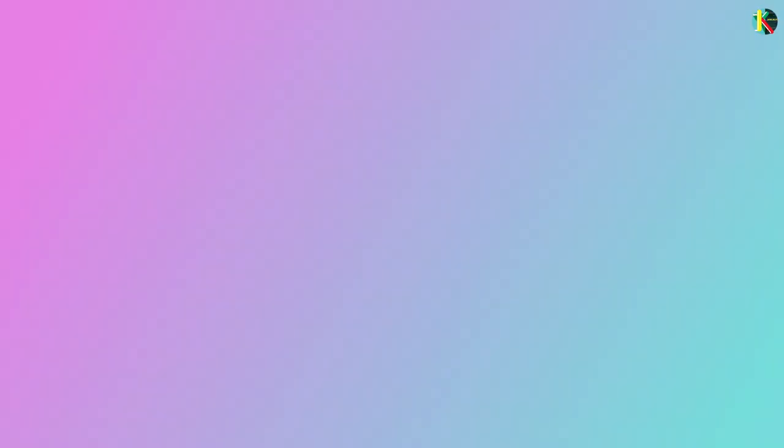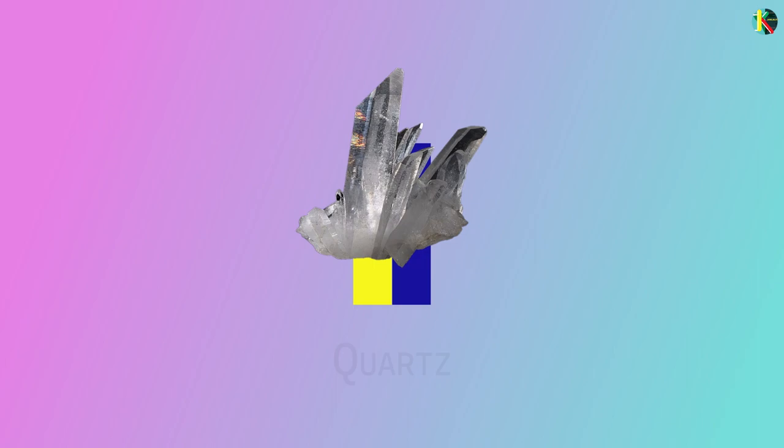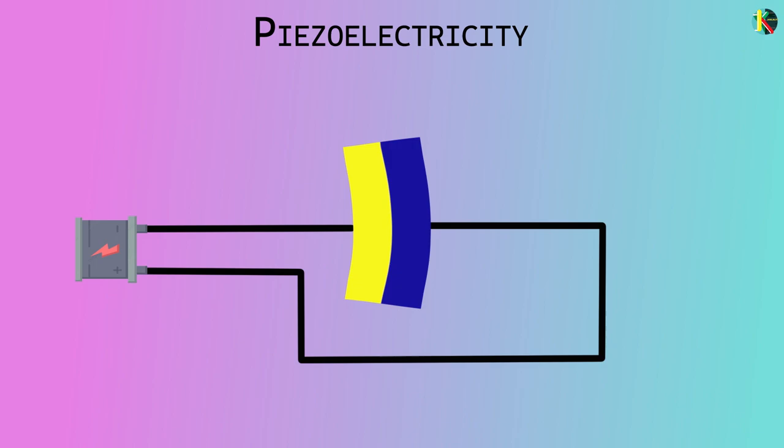It is a piezoelectric crystal which means bending it will accumulate electrical charges. Similarly, electric charges make the crystal bend. The frequency at which the crystal oscillates depends on its shape, size and the crystal plane on which the quartz is cut.